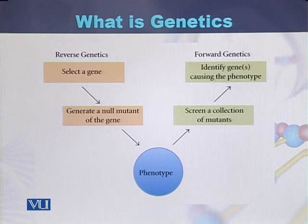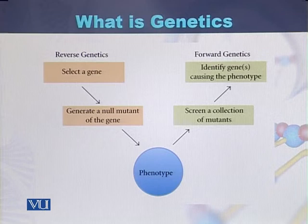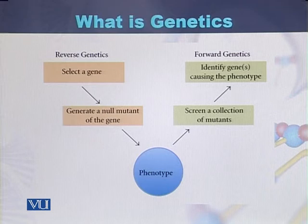In forward genetics, a geneticist or researcher first identifies the phenotype. Then, based on the phenotype, certain mutants or genes are screened and ultimately a particular gene is identified that is responsible for a specific phenotype.